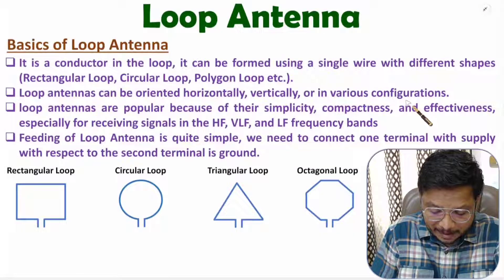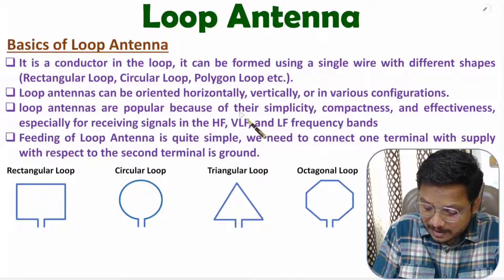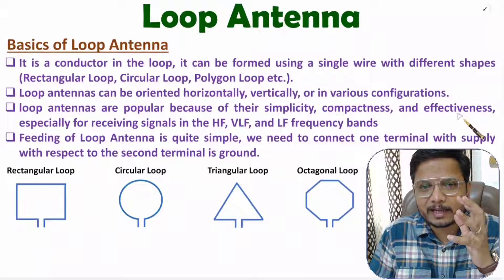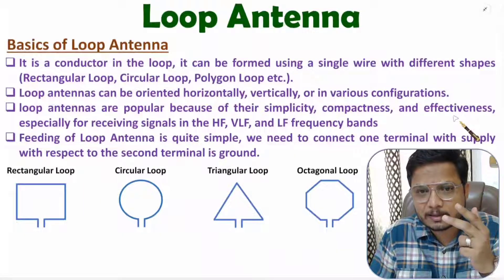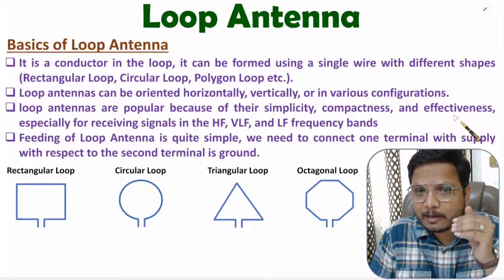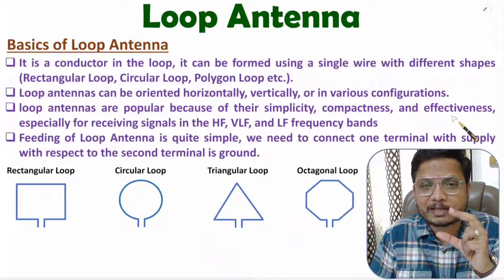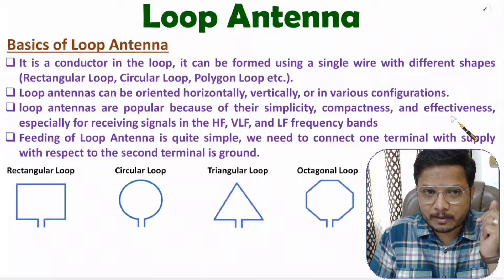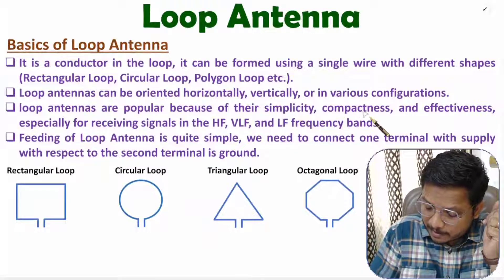Loop antennas can be oriented horizontally, vertically, or in various configurations. Loop antennas are popular because of their simplicity, compactness, and effectiveness. There are large loop antennas operated at lower frequencies, and there are very compact loop antennas used in compact applications like RFID and NFC.